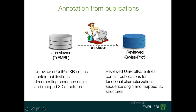Now I'd like to move on to the publications and the changes that we've made within the UniProt knowledge base. Basically all the entries in the UniProt knowledge base, whether they're reviewed or unreviewed, contain at least one publication. In the unreviewed section, it's those publications documenting the origin of the sequence and also mapped 3D structures. Those publications might not necessarily be papers in the strict sense, as sometimes people only submit and publish the sequence without an additional paper.